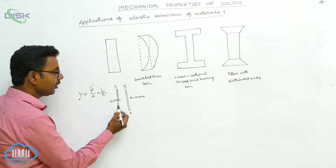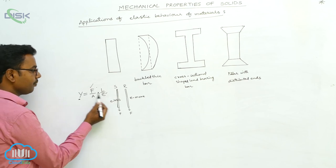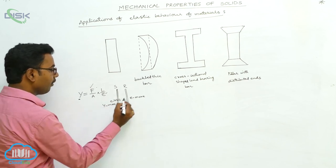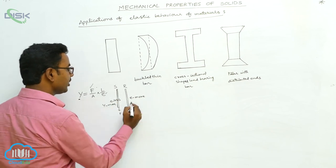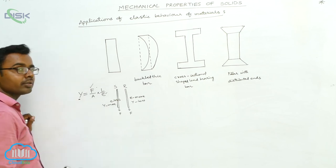Now, for same load applied for steel and rubber wires, elongation is less for steel, so Young's modulus is more. And for rubber cord, elongation is more, Young's modulus is less, meaning elasticity is less.